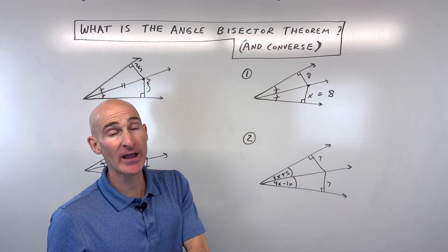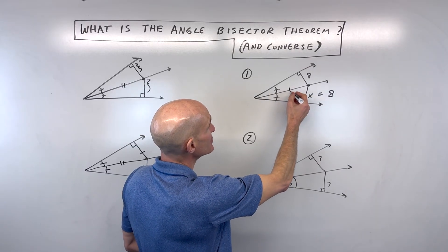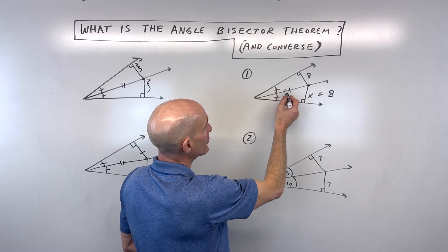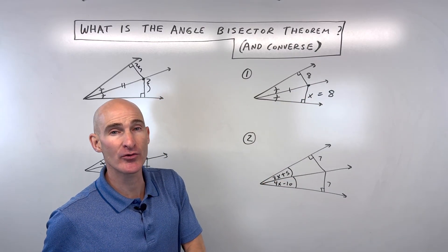So that tells us that x is equal to 8. Pretty simple, right? Now if you forget, just use your congruent triangles. You can see that this is congruent by reflexive. The two triangles are congruent by angle angle side, and by CPCTC, the corresponding parts are congruent, right?